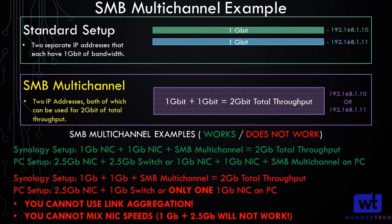That's the biggest disclaimer. There are two other disclaimers as well. First, you cannot use link aggregation. I have a video on link aggregation and it's great, however SMB multi-channel requires two separate IP addresses for each network interface. When you use link aggregation you bond the interfaces together and you'll only have one IP, so unfortunately it will not work with link aggregation.